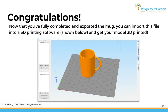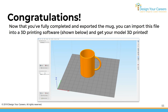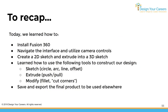Congratulations — you've created a coffee mug! You can import this STL file into 3D printing software to get it printed. Using a 3D printer is a separate workshop. To recap: we learned how to install Fusion 360, navigate the interface and use camera controls, create a 2D sketch and extrude it into a 3D object, and use the sketch tools including circle, arc, line, and offset. We used the extrude tool for push and pull, and the modify fillet tool to finish the design. We also learned to save and export the final product.